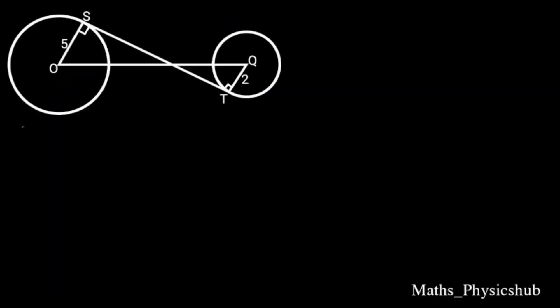From the figure, OS equals 5, QT equals 2, OQ equals 14, and ST is unknown. To find ST, first let's call the point of intersection of the two lines Z. Next we relabel. Since OQ is 14, let QZ be X, so that OZ will be 14 minus X.